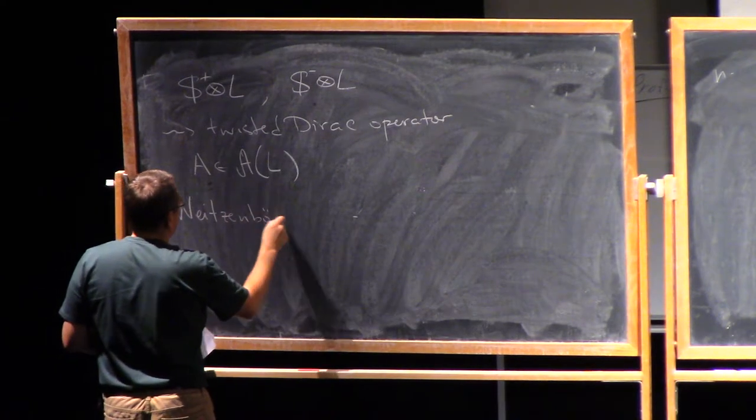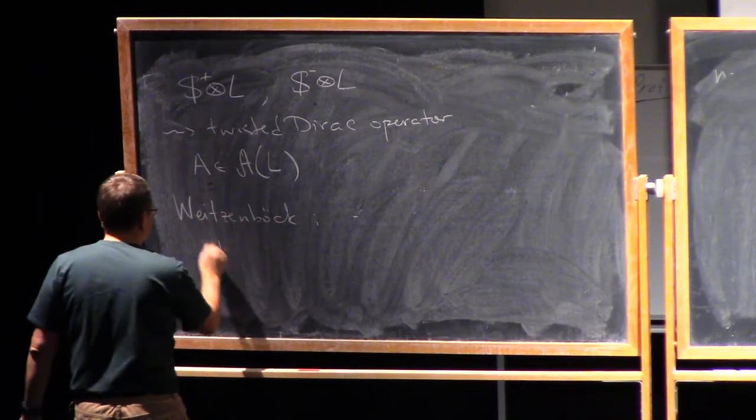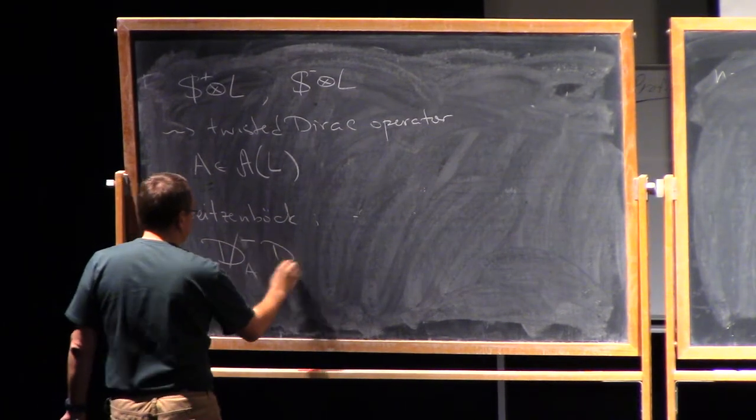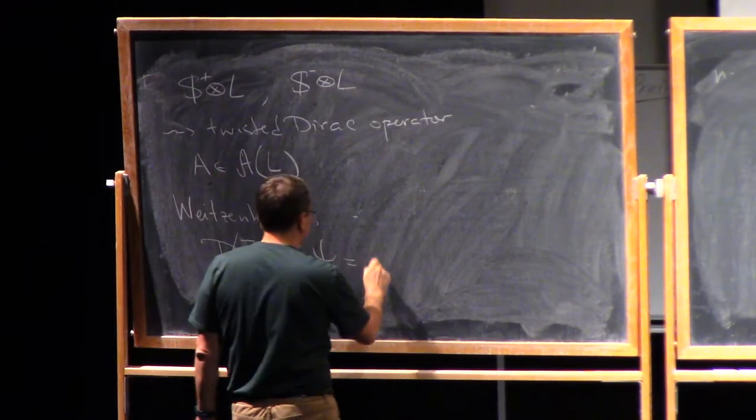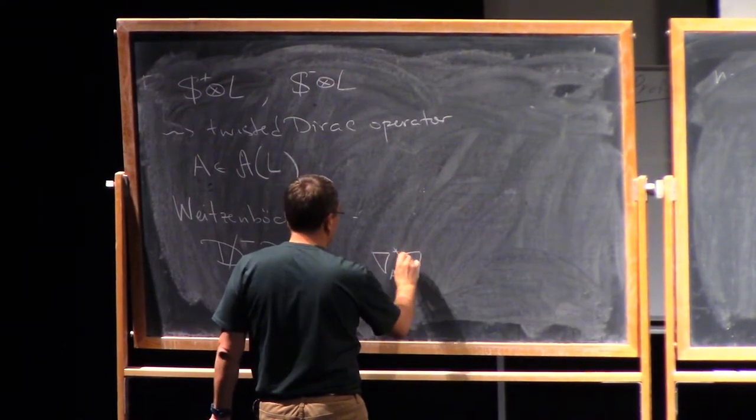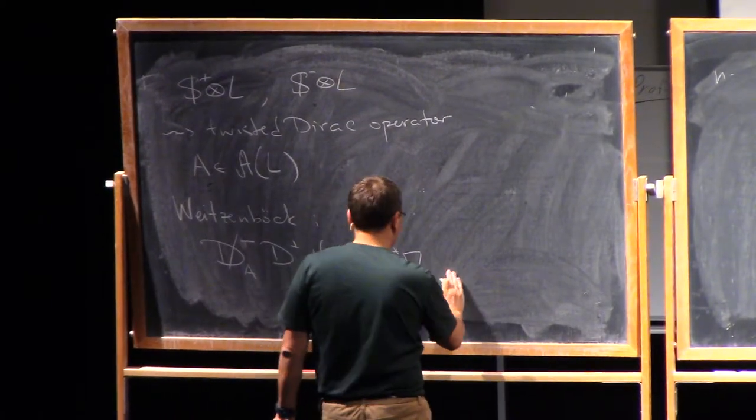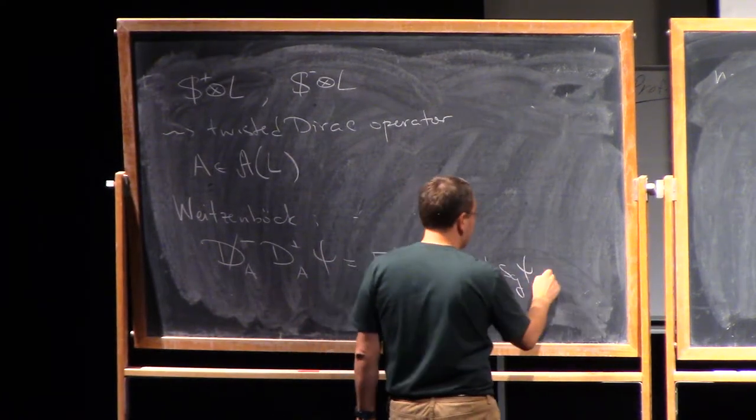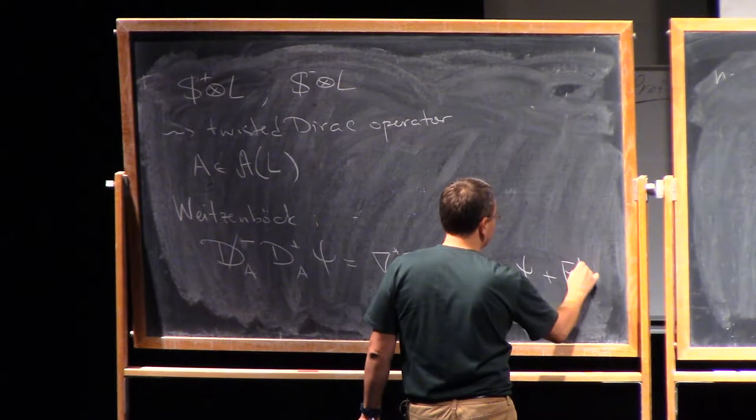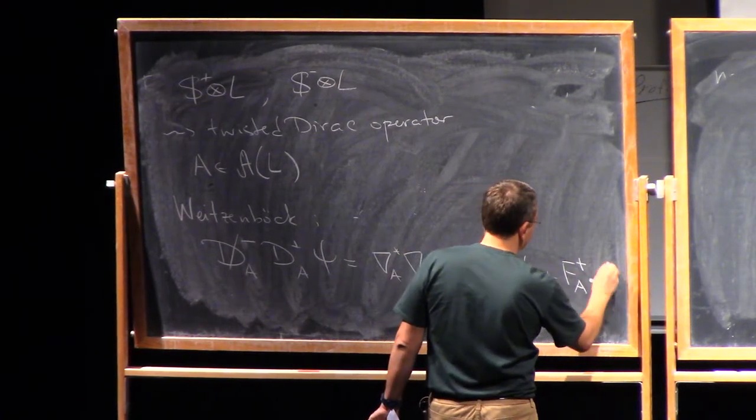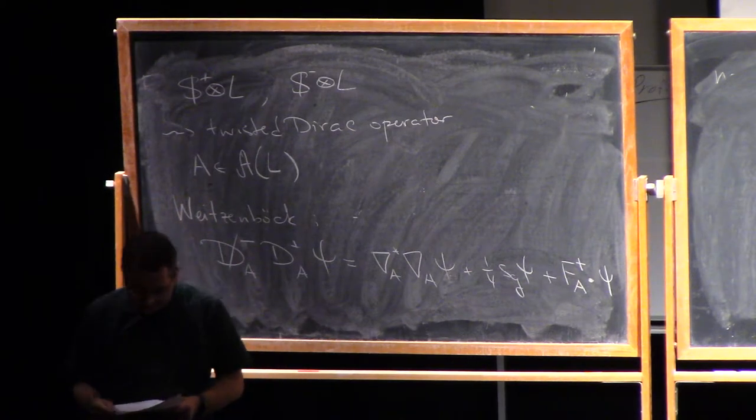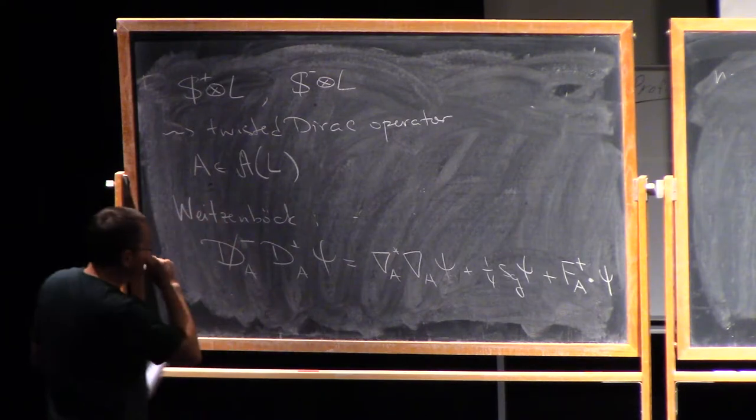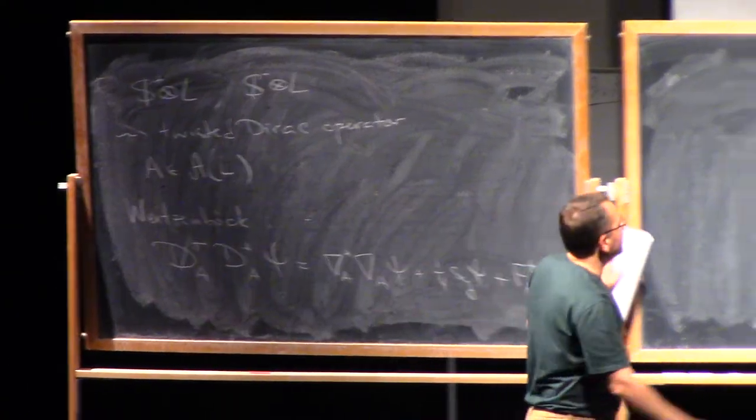And in this case, the Weizenberg formula is dA minus dA plus, applied to Psi, is nabla A star nabla A, applied to Psi, plus one-fourth of the scalar curvature applied to Psi. And one extra term, which is the self-dual part of the curvature, Clifford multiplied with Psi.